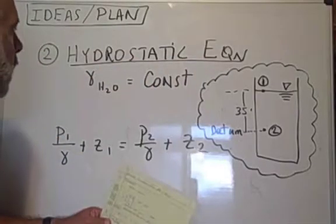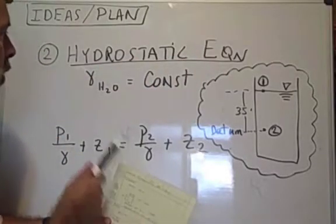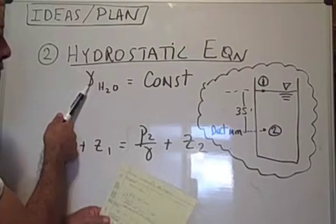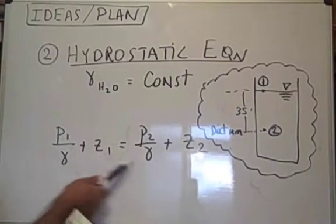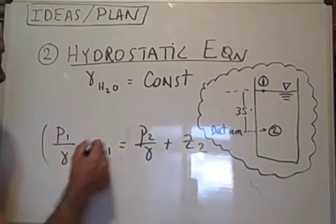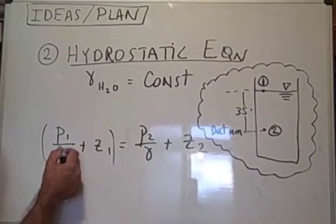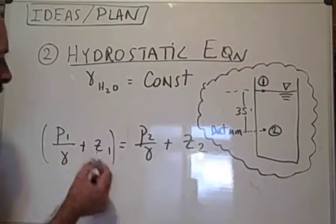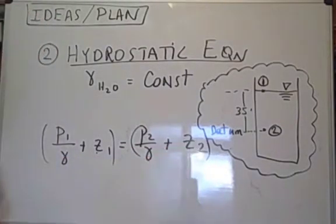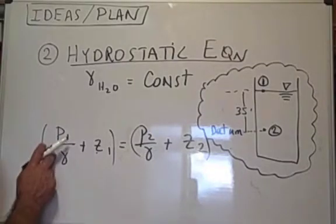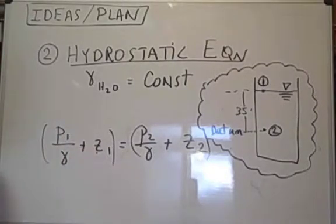The second idea is the hydrostatic equation. We can select this because the specific weight of the water is constant and the water is stationary. Here I've written the hydrostatic equation in its general form. The pressure at one divided by specific weight plus elevation at one equals the pressure at two divided by specific weight plus the elevation at two. Pressure head plus elevation head at one equals pressure head plus elevation head at two.